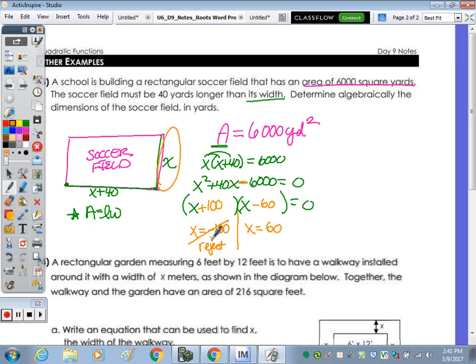So we reject the negative because that represented our width. It says determine the dimension, so it wants both length and width. Our width is 60 yards, and then our length, 60 plus 40, is 100.